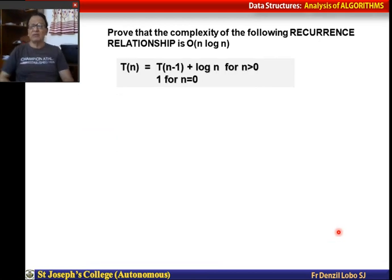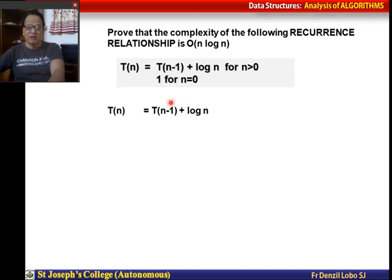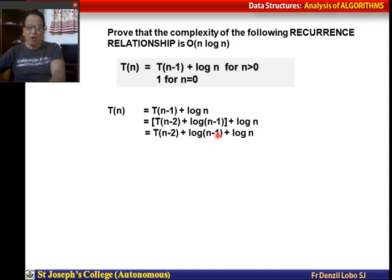Now we prove that the complexity of the recurrence T(n) = T(n-1) + log n (for n > 0, T(0) = 1) is O(n log n). We substitute T(n-1) = T(n-2) + log(n-1), giving T(n-2) + log(n-1) + log(n). Substituting again: T(n-3) + log(n-2) + log(n-1) + log(n), and so on.